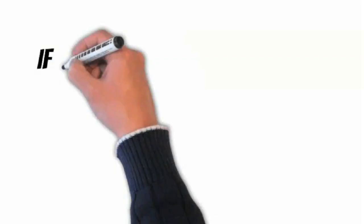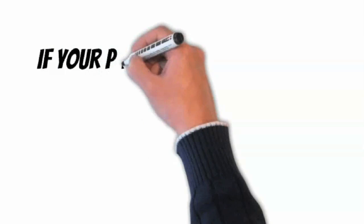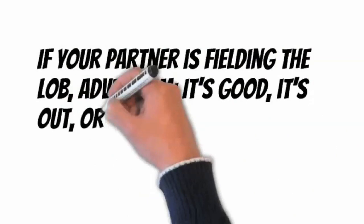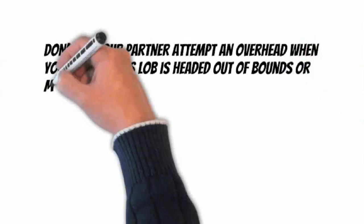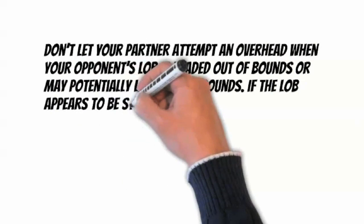If your partner is fielding the lob, advise him, it's good, it's out, or bounce it. This communication is essential. Don't let your partner attempt an overhead when your opponent's lob is headed out of bounds or may potentially land out of bounds. If the lob appears to be staying in bounds, yell it's good to allow your partner to execute an overhead shot rather than a shot after the bounce.